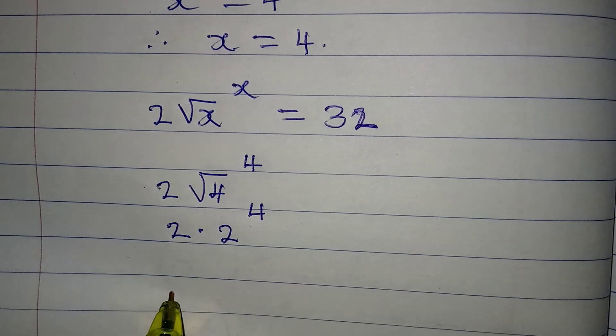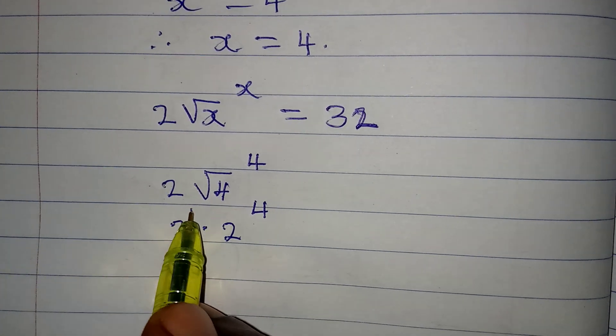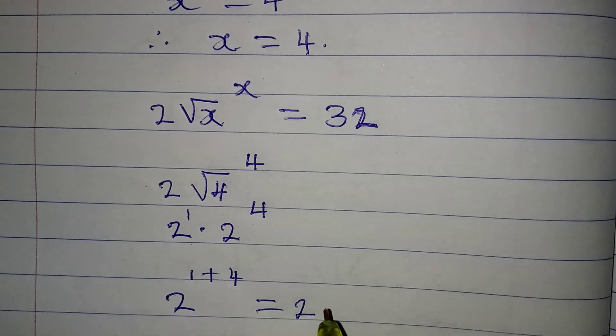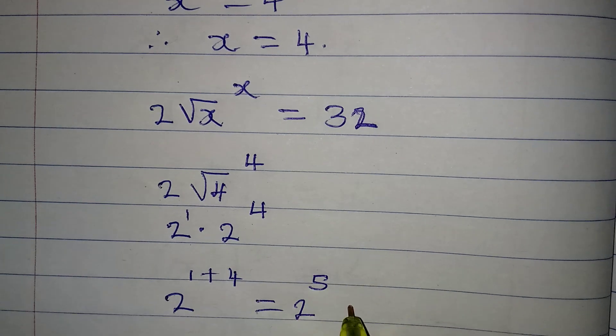Now let's apply one of the laws of indices: pick one of the basis which is 2, this is the power of 1, so it's going to be 1 plus 4, and this will give us 2 to the power of 5.